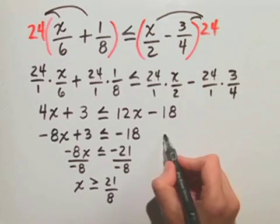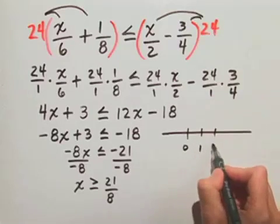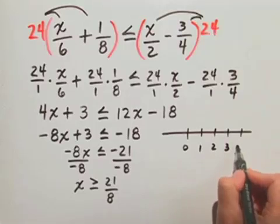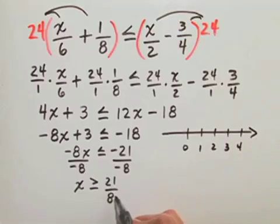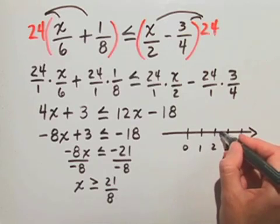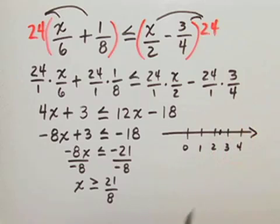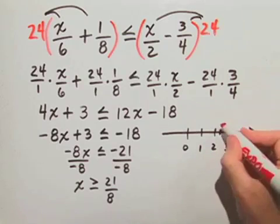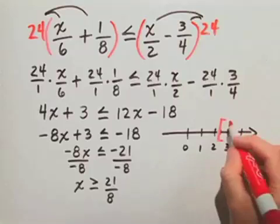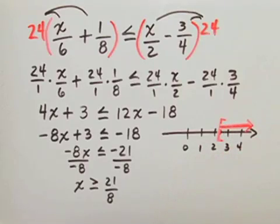Let's look at the graph. We have 0, 1, 2, 3, 4. Where is 21 over 8? Well we know 8 goes into 21 two times, that gives us 16 with 5 left over. So it's somewhere between 2 and 3. And we can put 21 eighths right about there. We want x greater than or equal to, so we want an arrow going to the right. There's our graph.